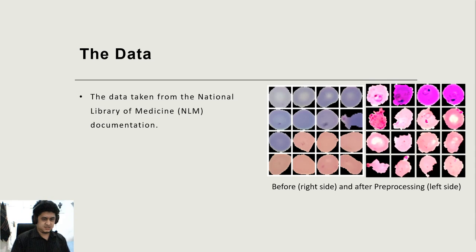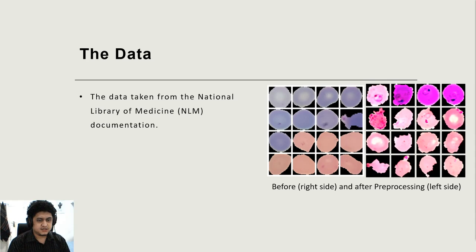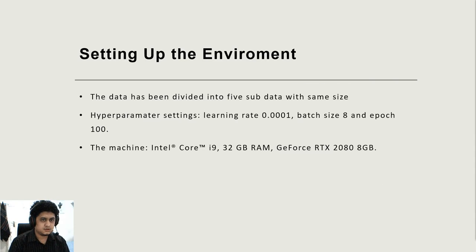Before inputting the data into the model, we preprocess the data. We convert non-square images into square images with additional padding in the areas needed. Then we normalize the image and resize it to 64 by 64 pixels. In the training phase, we divide the data by 5 and use a cross-validation method to ensure that we get good results.